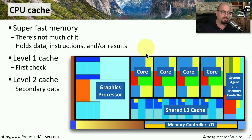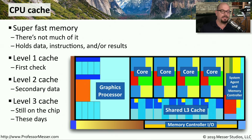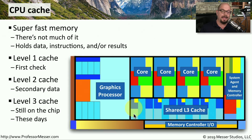The level two cache may also be part of the same core, as shown in the diagram here — it's the secondary level or secondary storage of cache memory. Level three cache these days is still very often on the same physical processor, although in this case it's shown as a shared cache across all four cores.